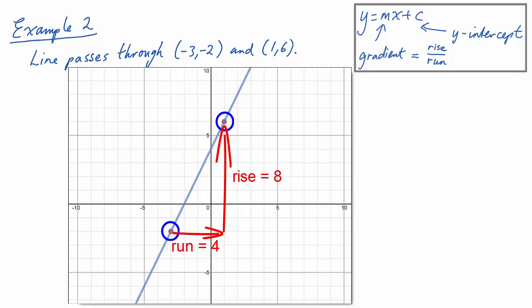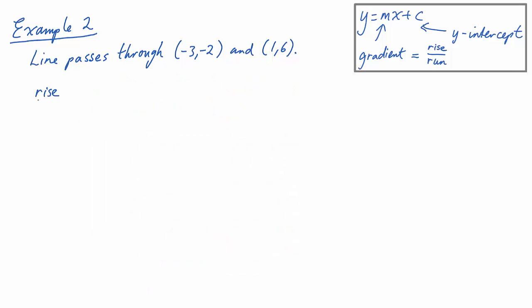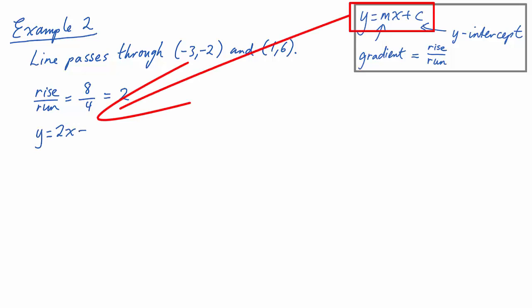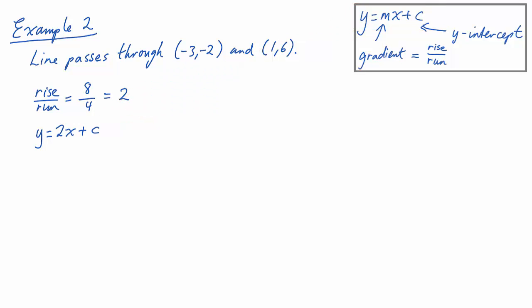We always go left to right when we're calculating rise and run. So we've got a rise of 8 and a run of 4, which is a gradient of 2. Now if the gradient is 2, that means our rule must be y equals 2x plus some number, and we're going to call that number c. We know it has to pass through (-3, -2) and (1, 6).